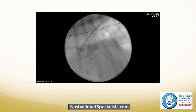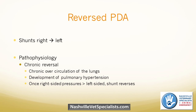That covers a normal, straightforward PDA. We'll briefly mention a reversed PDA, or a PDA that shunts right to left. A reverse PDA can occur from a few reasons. One is chronic reversal — with a PDA, the lungs see a lot of over-circulation with every heartbeat, and over time this can lead to pulmonary hypertension. Once right-sided pressures exceed left-sided pressures, the shunt reverses. Blood flow goes based on pressure gradient — if right-sided pressures are greater than left-sided, blood will flow in the reverse direction.